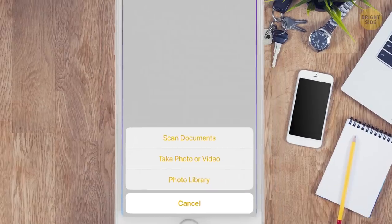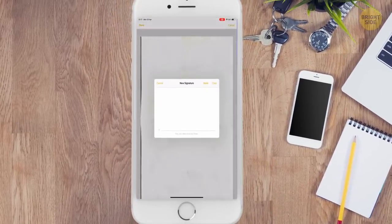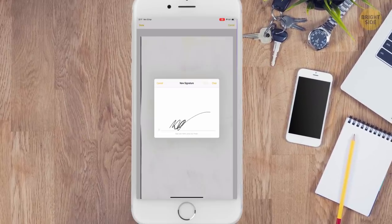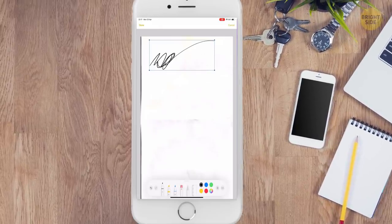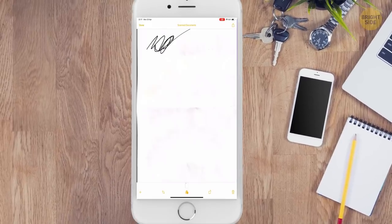To sign a file or add some other marks, open the note with a scan in it. Tap the share button, choose Markup, and press the plus button. Pick between text, signature, magnifier, or shape. After you're finished, don't forget to tap Done and save the changes.